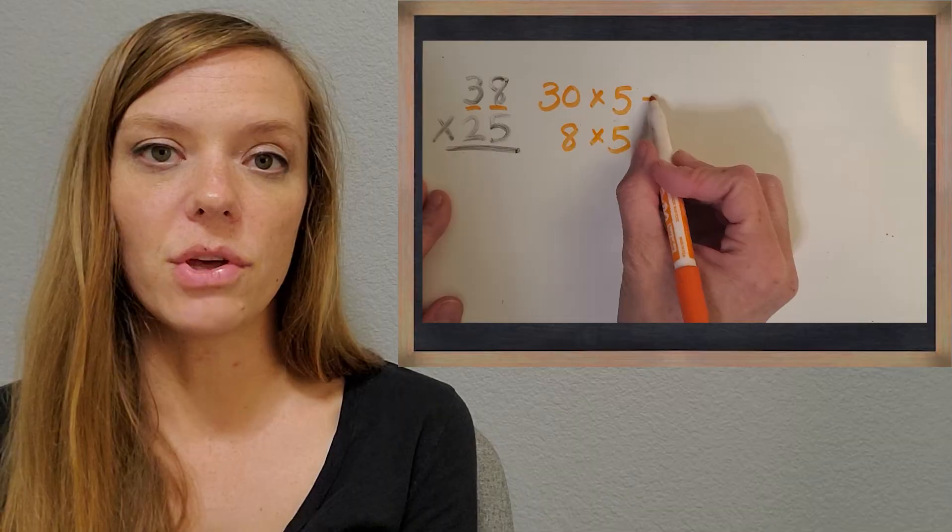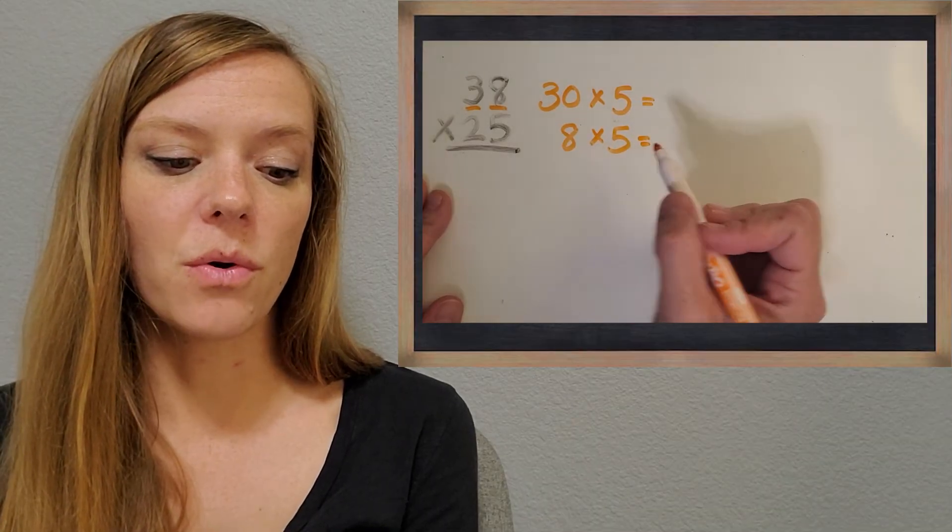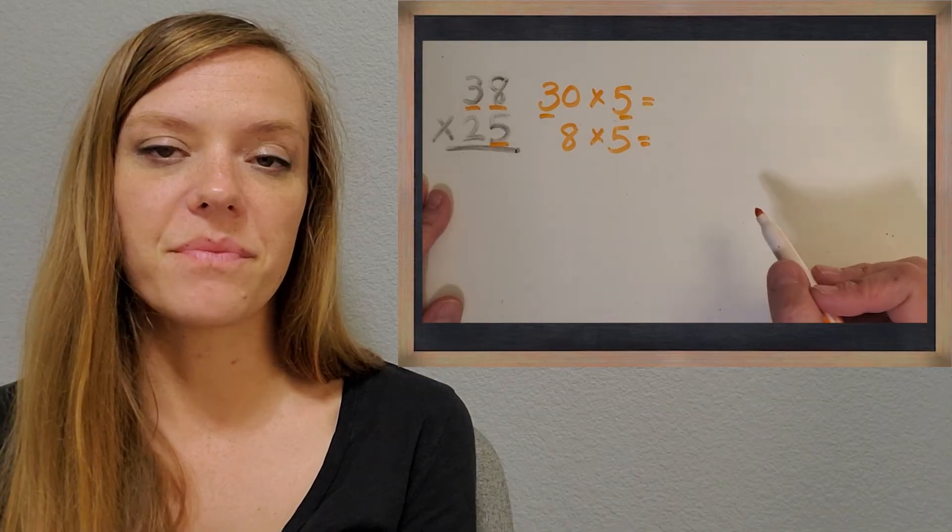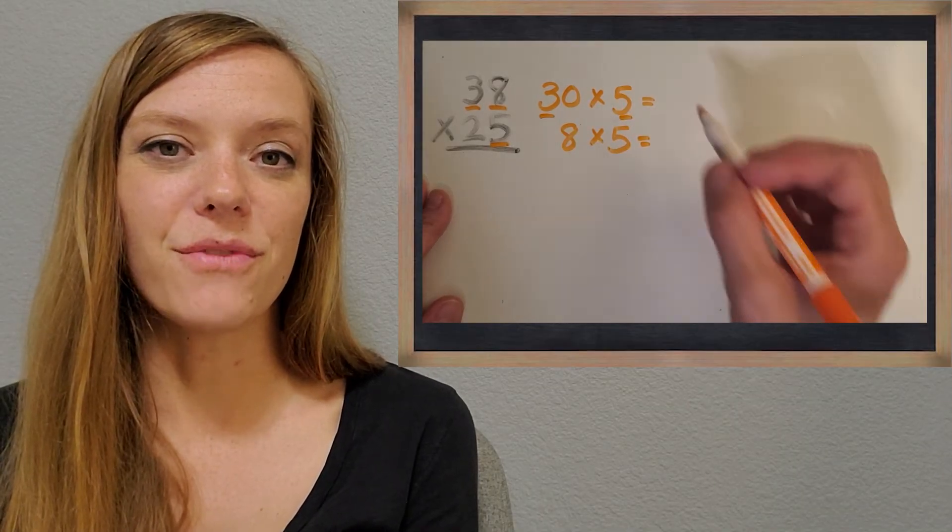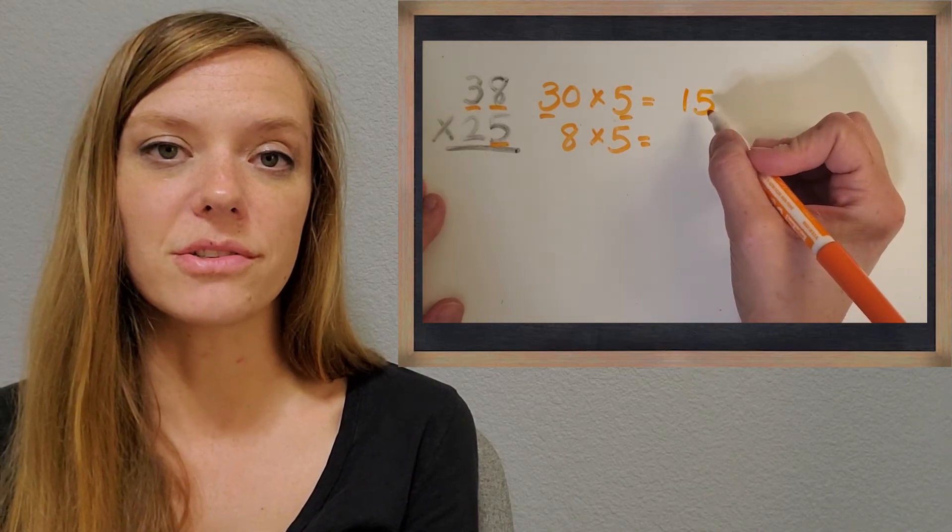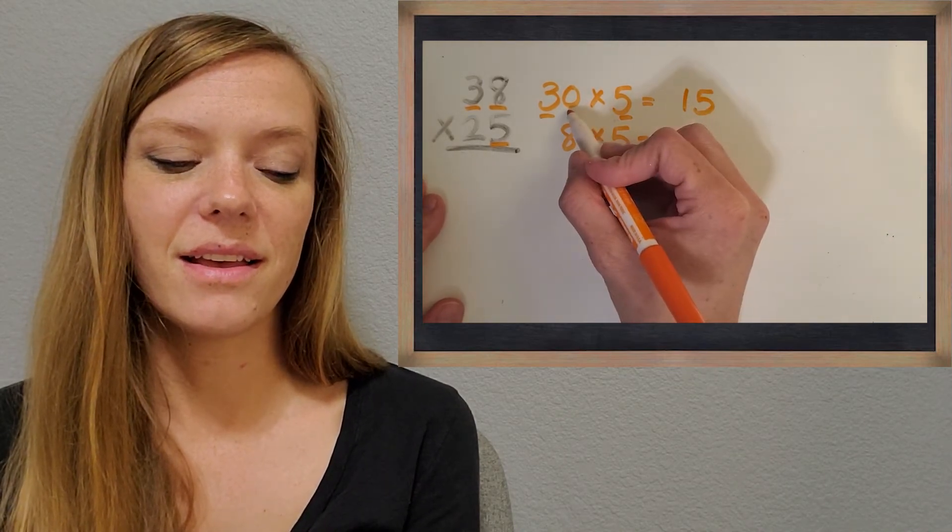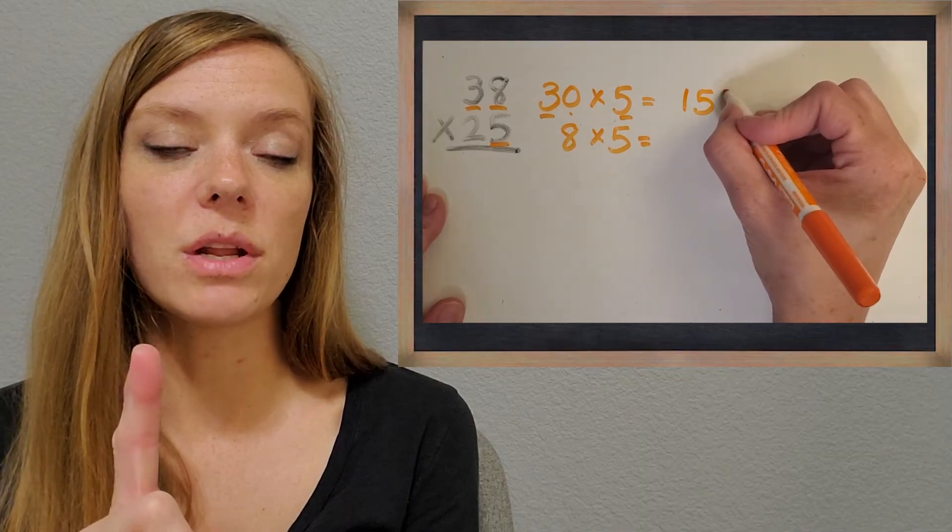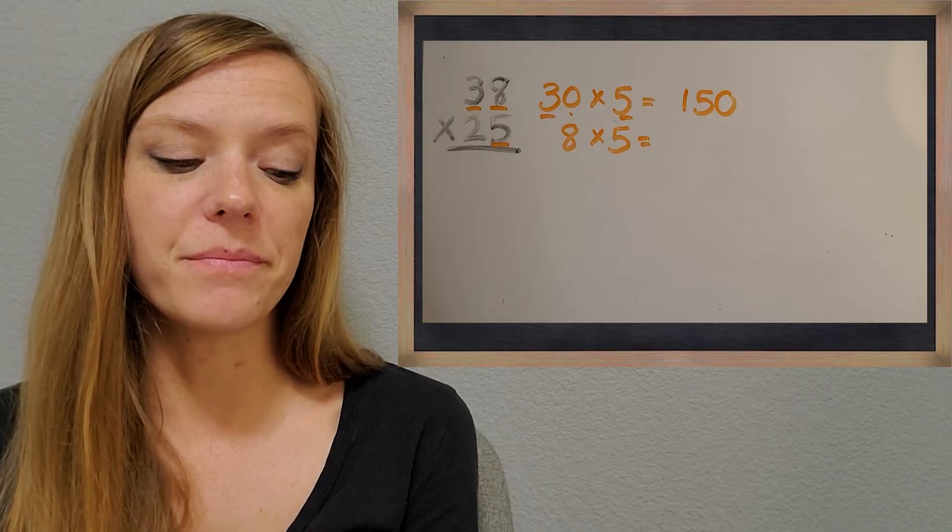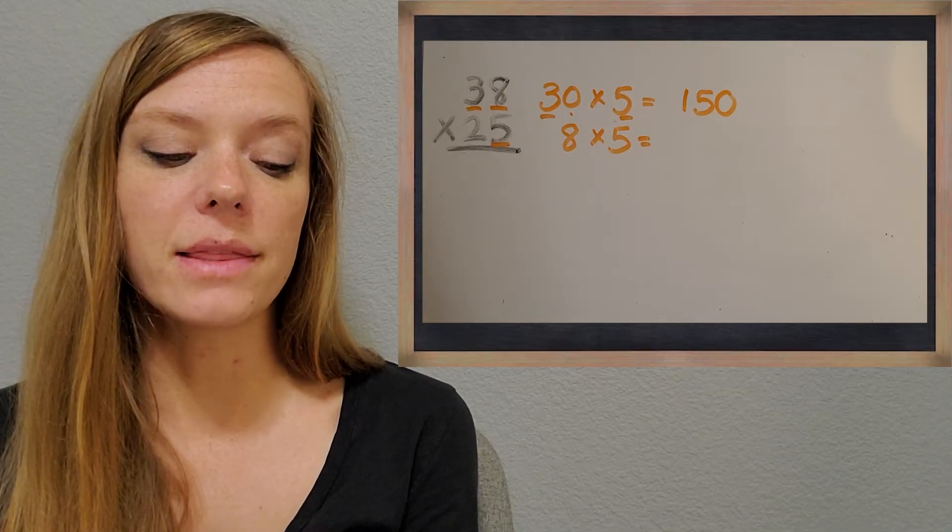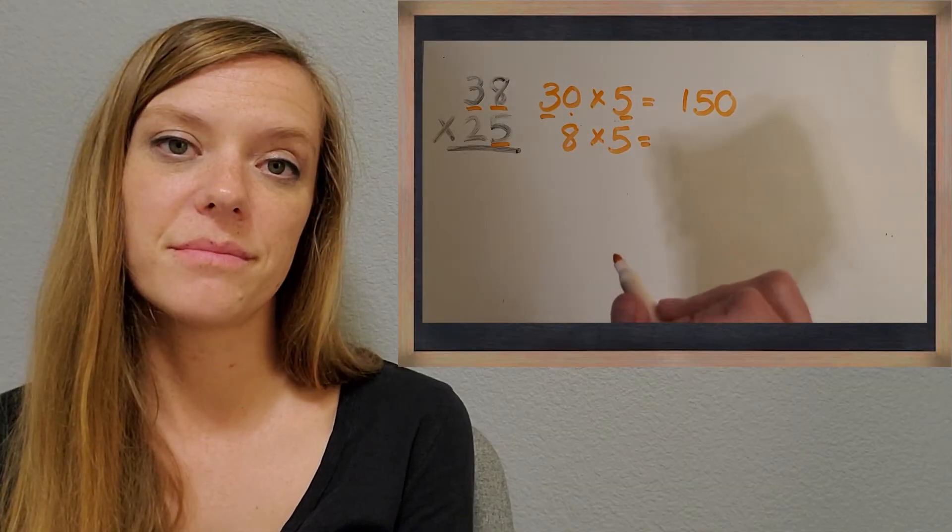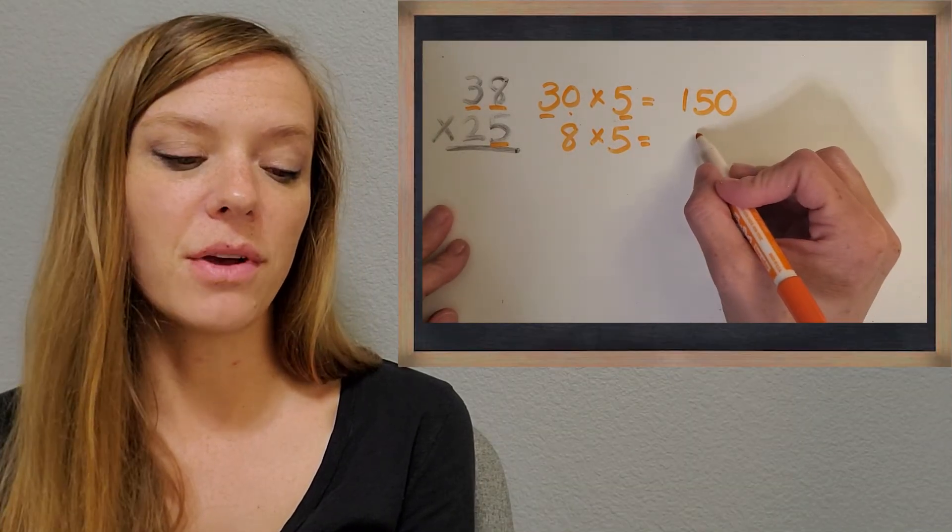So let's solve those first. So what is three times five on that first problem? You got it 15. And how many zeros are in my two factors? Awesome. Just one. So we're going to put just one on the end of the answer. So 150. And then what is the next one? It's just a basic fact. What is eight times five? You got it 40.